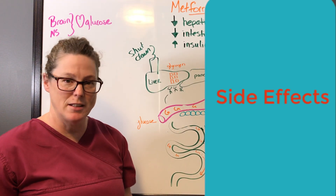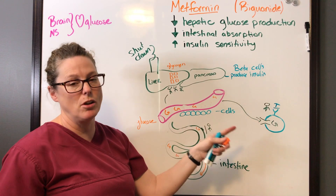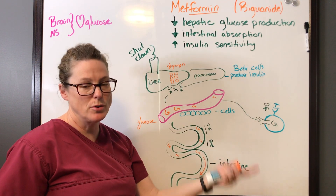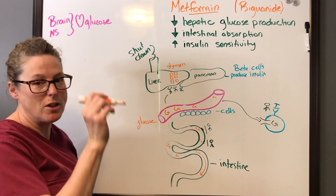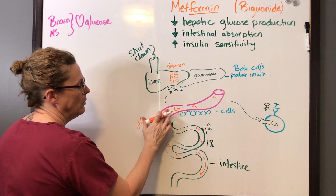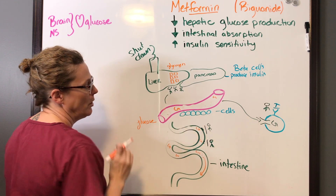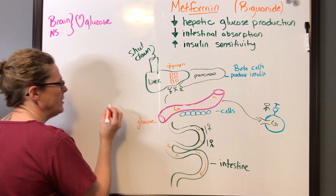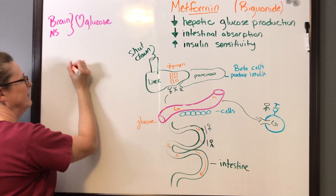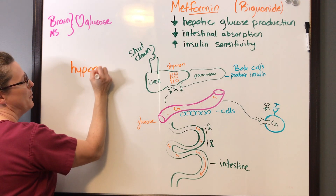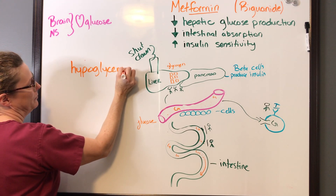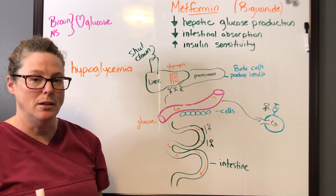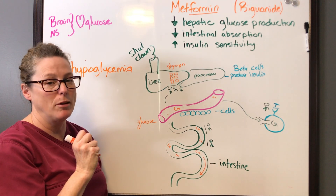Now we need to look at side effects. I have an intended target of reducing glucose. Side effects are often related to overdosing or under-treatment. If I have too much, I've been over-treated — I'm losing even more glucose, I'm so low in sugar in my bloodstream. What do we call that? Hypoglycemia. So all of the signs and symptoms that go with hypoglycemia potentially will be a side effect of metformin.